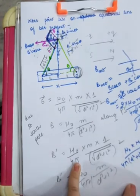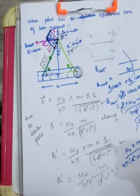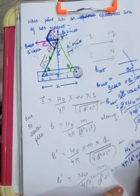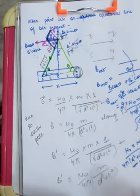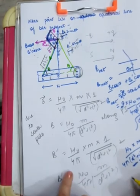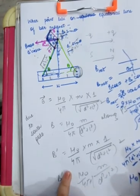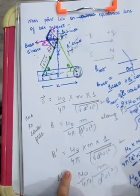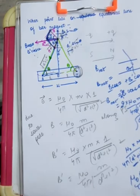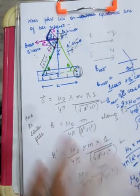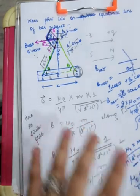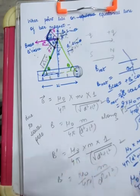For a very short magnet, l can be ignored, and the formula simplifies to B_net = (μ₀/4π) × m / d³. The derivation is similar to that of an electric dipole.